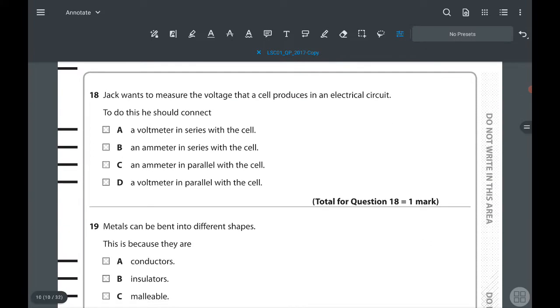18th: Jack wants to measure the voltage that a cell produces in an electrical circuit. To do this, he should connect... We know to measure voltage, we need to use a voltmeter, and also voltmeter has to connect parallel to the cell. So answer is D.